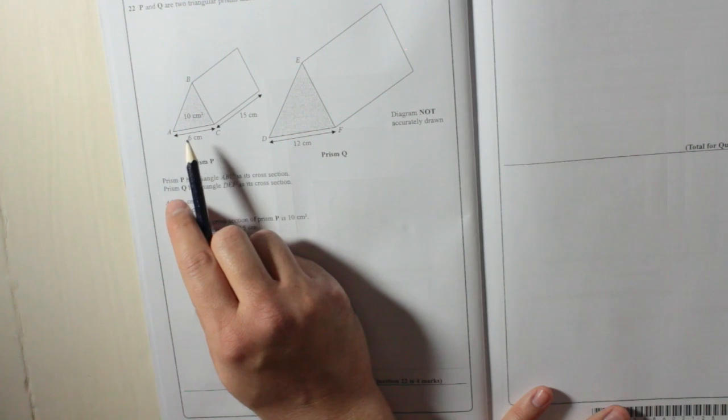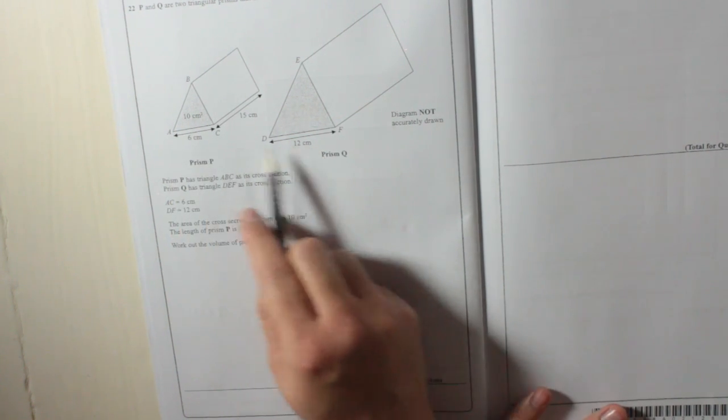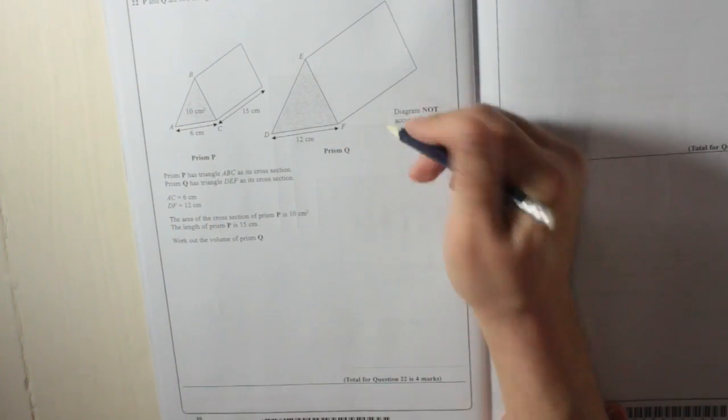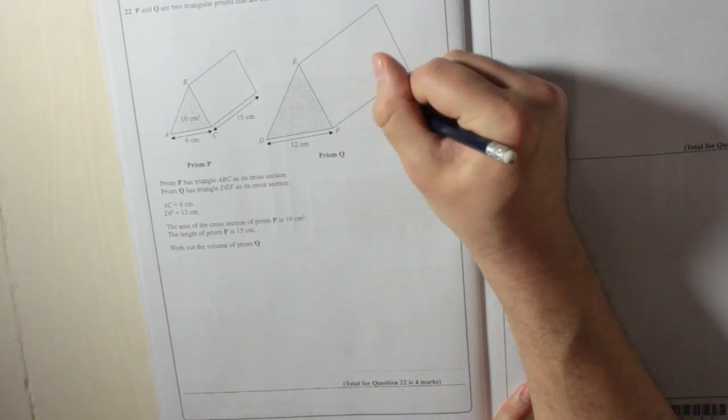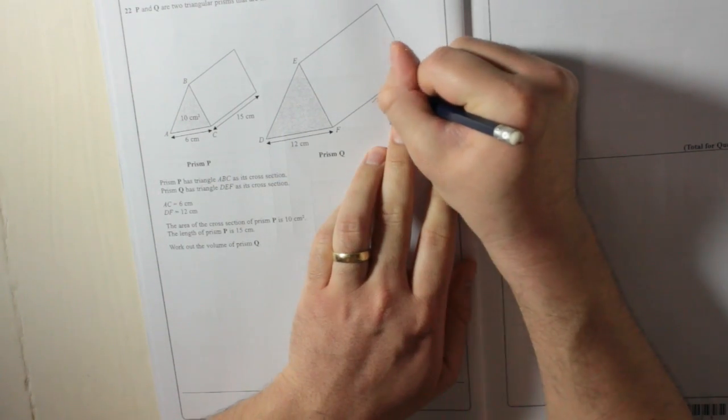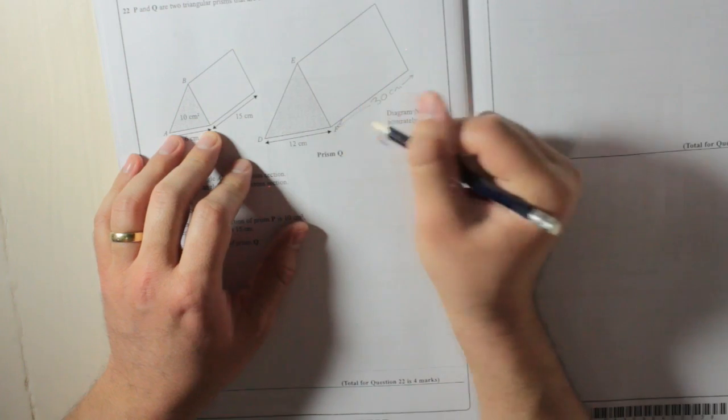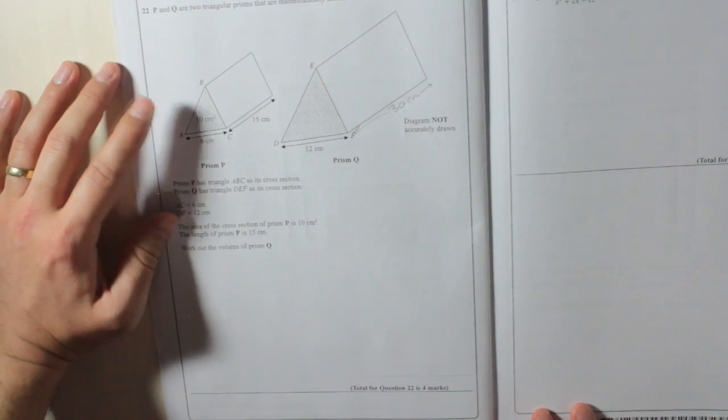Well, if the length there is 6 and that one's 12, that means you're going to double it. So that length there is going to be 30, because it's 15 times 2. So I'll write that in: 30cm. We'll need that.